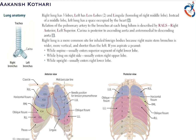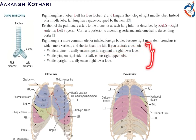If a substance such as a peanut is aspirated when the person is in the supine position, it usually enters the superior segment of the right lower lobe. When the person is lying on the right side, it typically enters the upper lobe of the right lung. When the person is standing or sitting upright, it usually enters the lower part of the lower lobe.